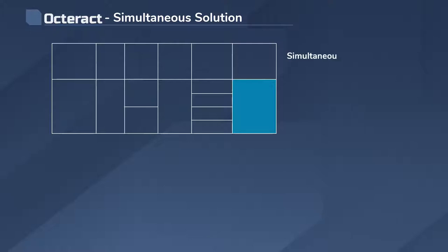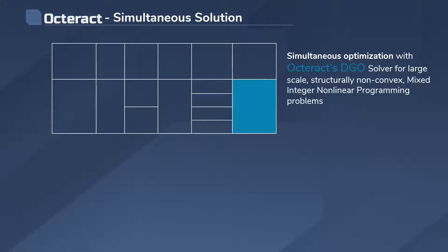If a simultaneous optimization approach is used, the results we get for the same network are different. Using Octaract's DGO solver and solving an until now really challenging large scale non-convex mixed integer non-linear problem, we get the absolute best solution. We get the absolute minimum cost.